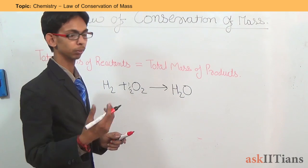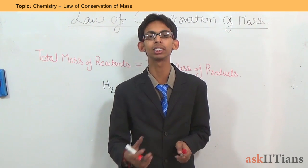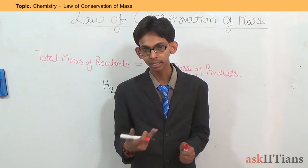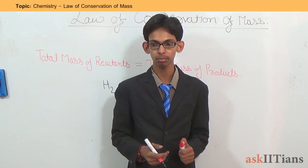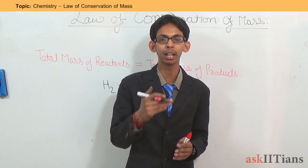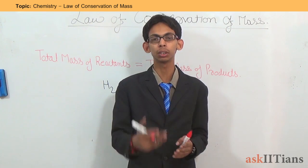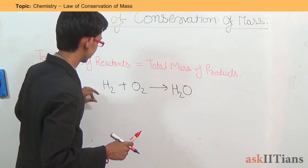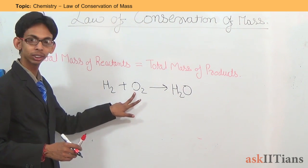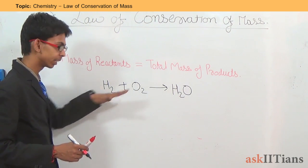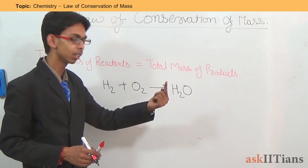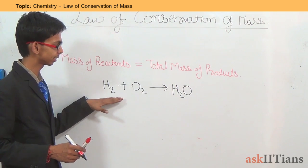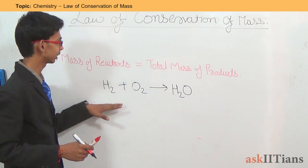Why do we always use a balanced chemical equation in chemistry? Why don't we use an unbalanced one? The answer is: because we want our chemical equation to fit the law of conservation of mass, according to which the total mass of reactants should equal the total mass of products. In an unbalanced equation, there are 2 oxygen atoms on the reactant side but only 1 on the product side, meaning the mass of reactants is greater than the mass of products by 1 atom of oxygen. So this does not follow the law of conservation of mass.